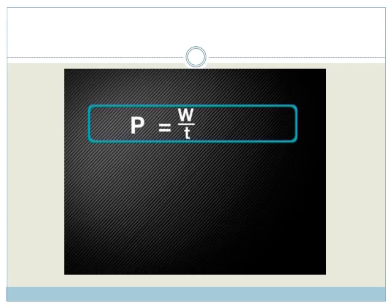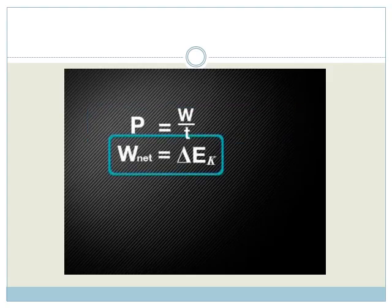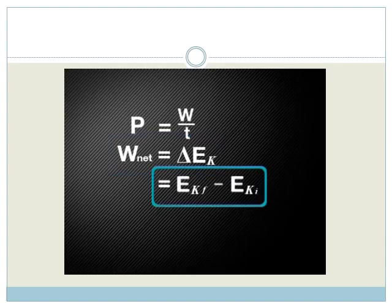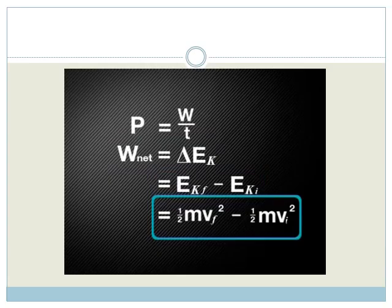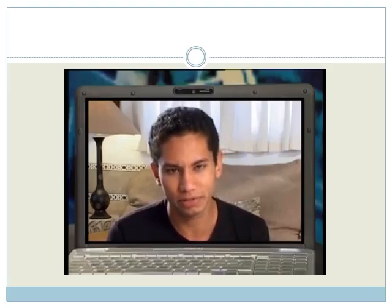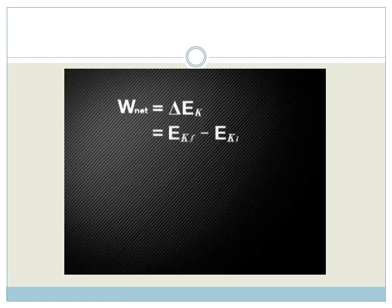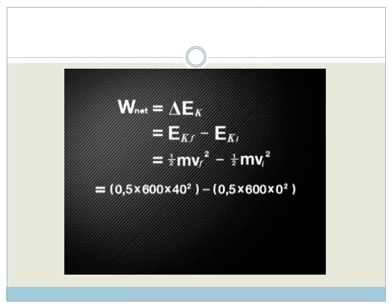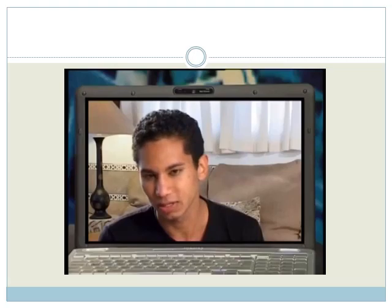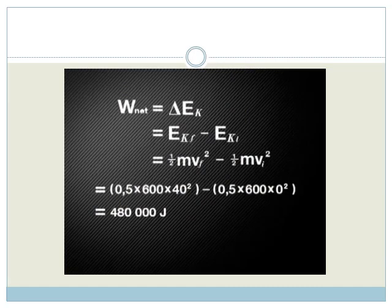First, we must calculate the work done by the car's engine. This is calculated using the equation net work equals change in kinetic energy. Remember, final and initial kinetic energies can also be calculated using half mass times velocity squared. Okay, I follow so far. Let me try that calculation. Right. I start with the equation, of course. Then, substitute in the given values. Well, that's quite a calculation. I'll use the calculator. Okay, so the racing car does 480,000 joules of work.